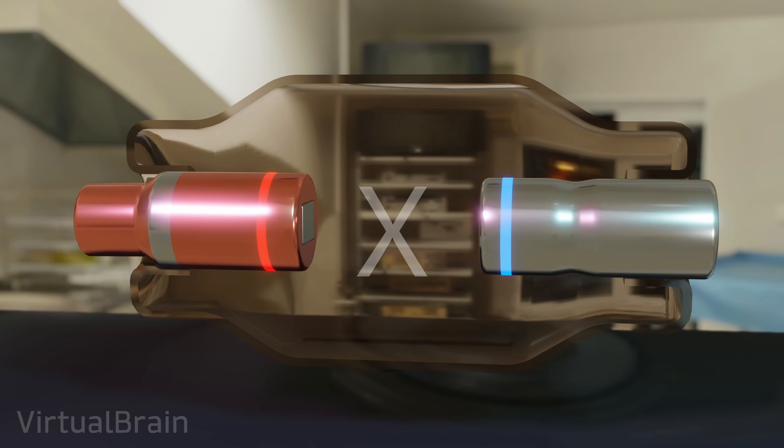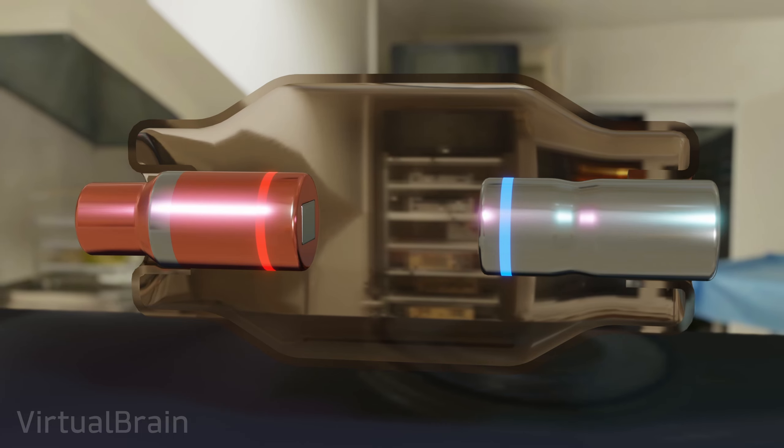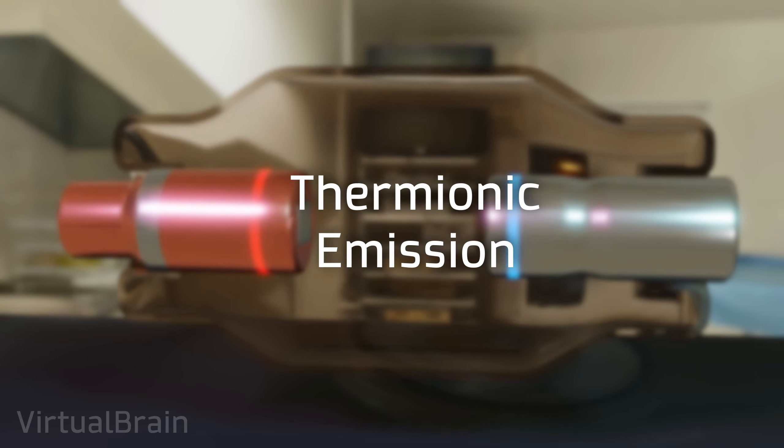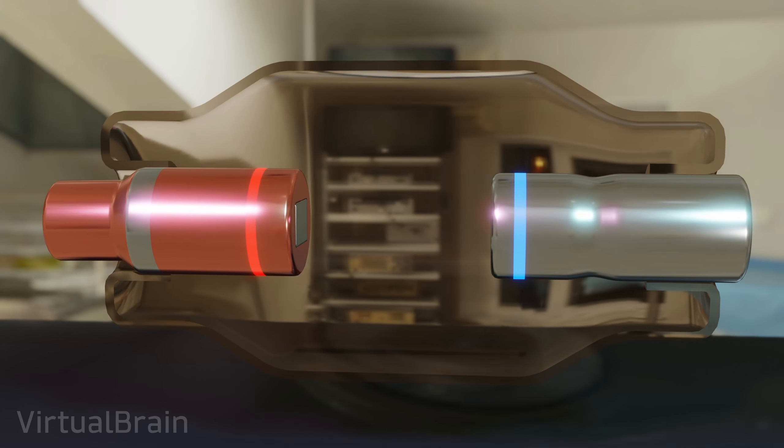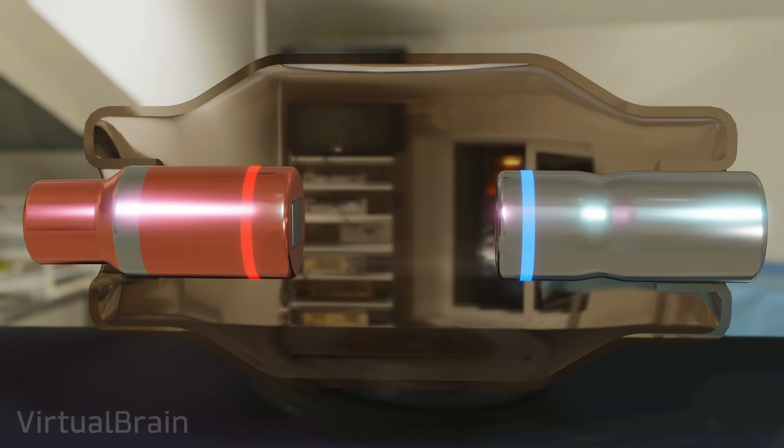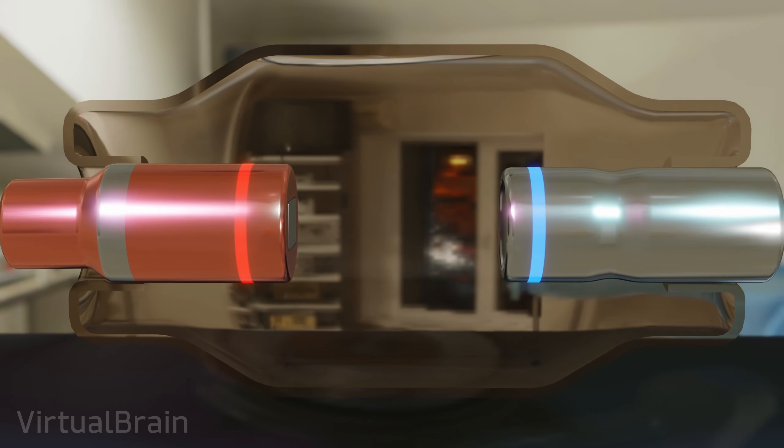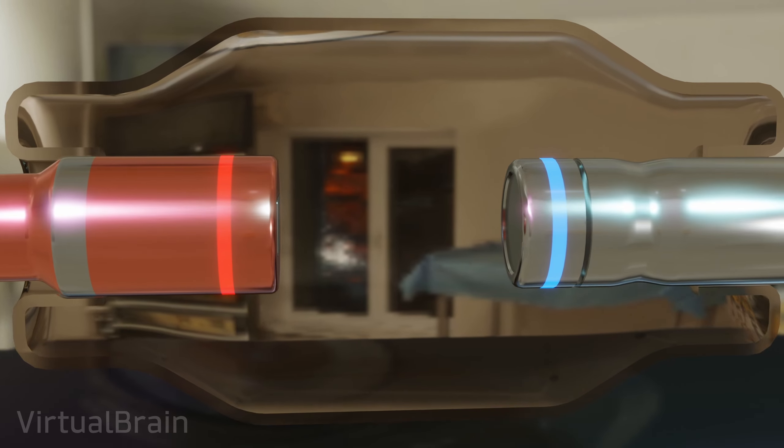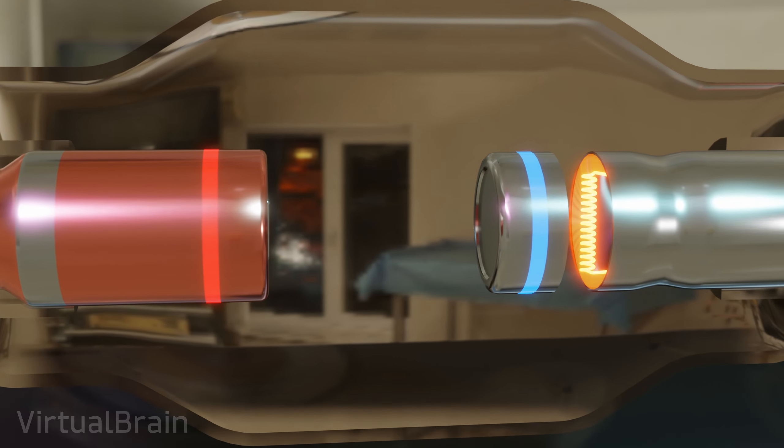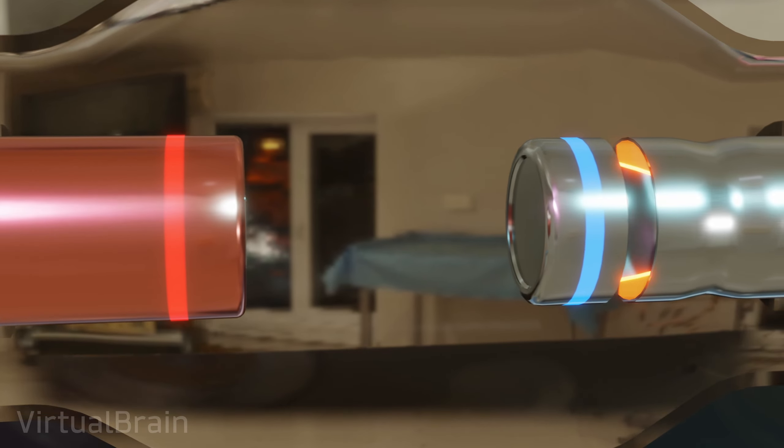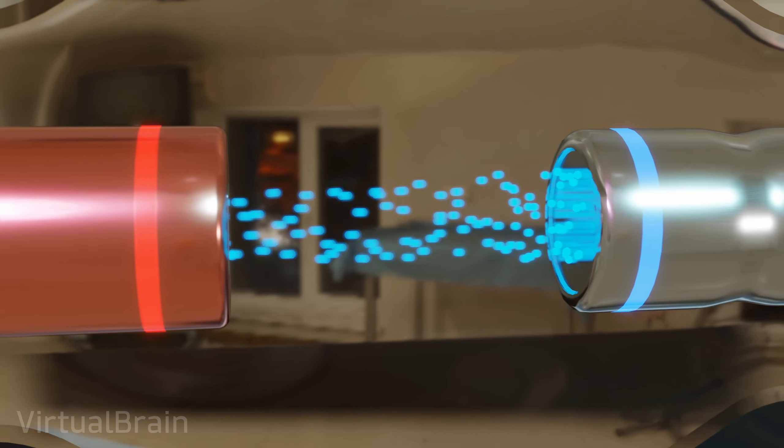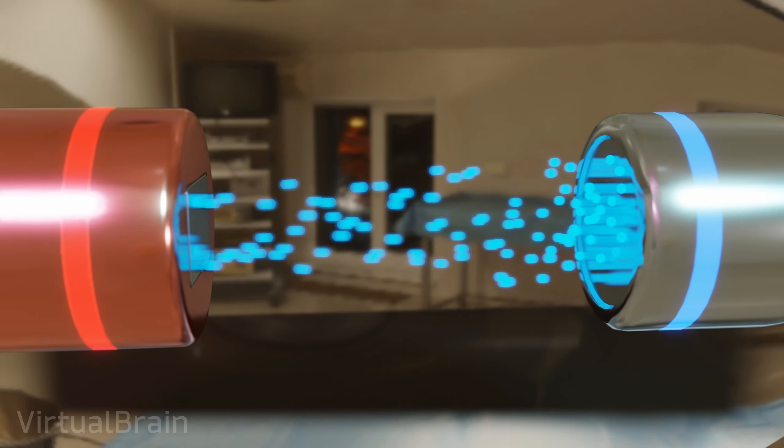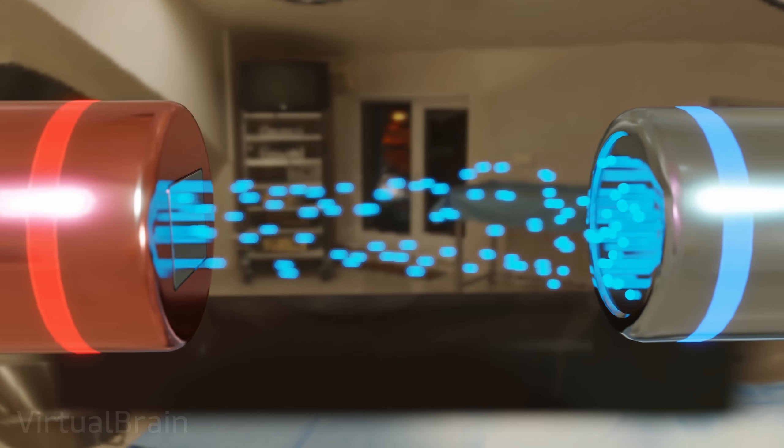To effectively make the electrons move from the cathode to the anode, an effect known as thermionic emission is used. This effect tells us that if we have a negatively charged metal and we heat it, the electrons will acquire enough energy to escape from the surface. So, by integrating a filament that is heated to high temperatures right next to the cathode, we can generate a continuous flow of free electrons. These will be instantly attracted to the anode at the other end, being accelerated by the electric field between the two electrodes.